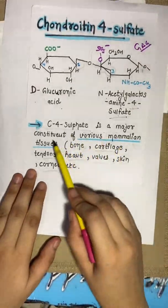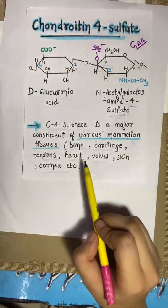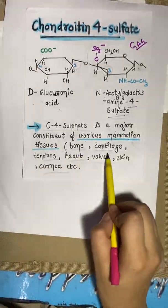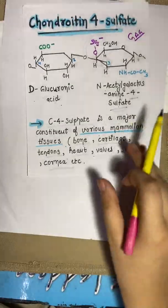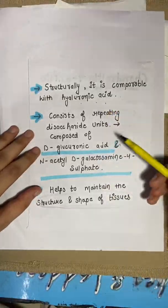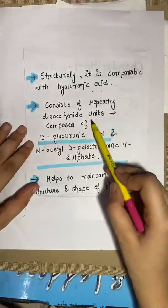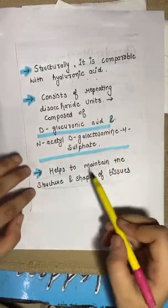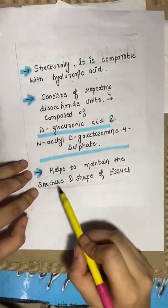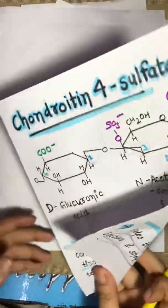Chondroitin 4-sulfate is a major constituent of various mammalian tissues including bone, cartilage, tendon, and heart. Structurally compared with hyaluronic acid, these disaccharide units are also repeated. It helps to maintain the structure and shape of tissues.